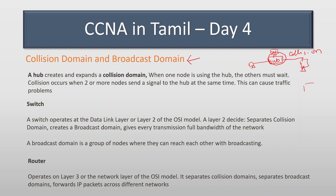You have multiple hubs. Here is the hub. The system is connected to the system — the collision domain will expand. The hub will connect to multiple hubs; the other must wait. The signal will sense. The collision will stop. The signal will sense. This is a multiple-time collision domain.